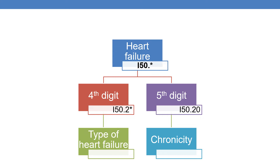Coming to the ICD-10CM code series: codes from category I50 deal with heart failure. It is a 3-digit code that is further subcategorized. The 4th digit indicates the type of heart failure, whereas the 5th digit indicates chronicity. For example, the 4th digit 2 indicates systolic heart failure. The final code I50.20 uses 0 as the 5th character, indicating unspecified — that is, not specified as acute or chronic.